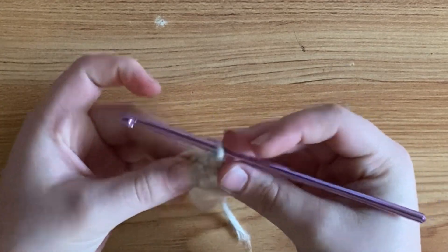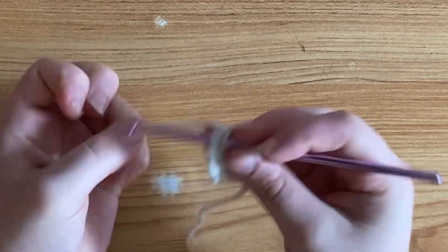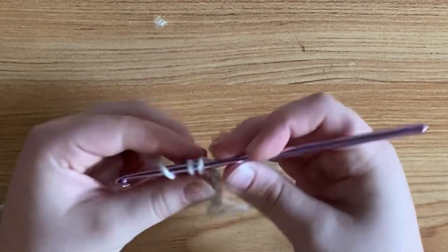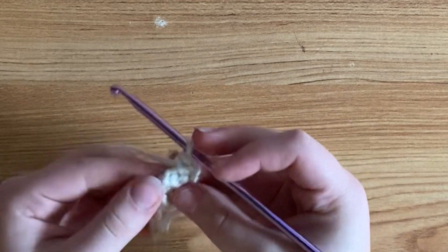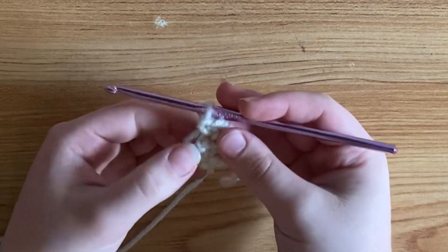Then chain one, turn your work, and I'm going to put one more single crochet in that first, the only stitch you have. So the single crochet two together, you're just going to put one single crochet into there.